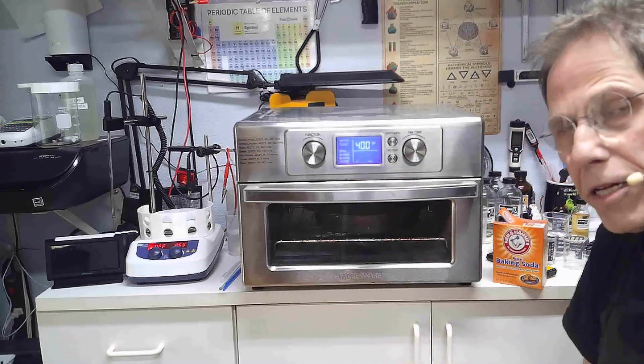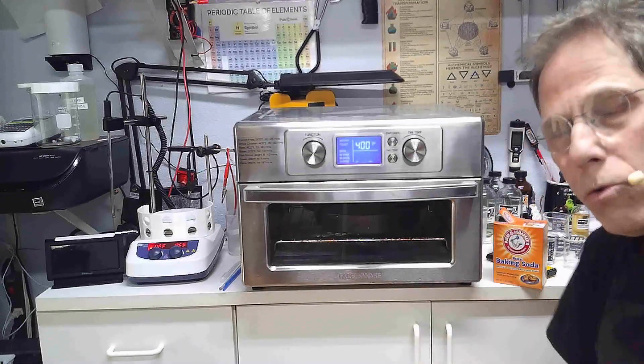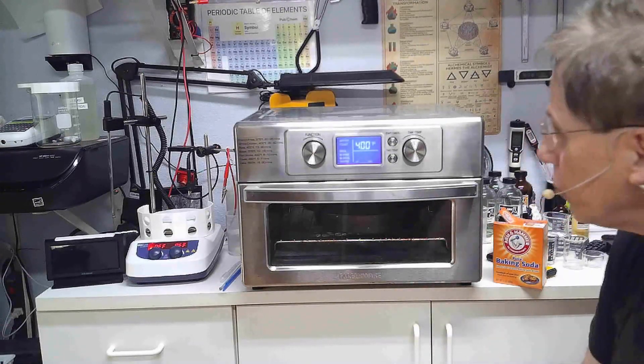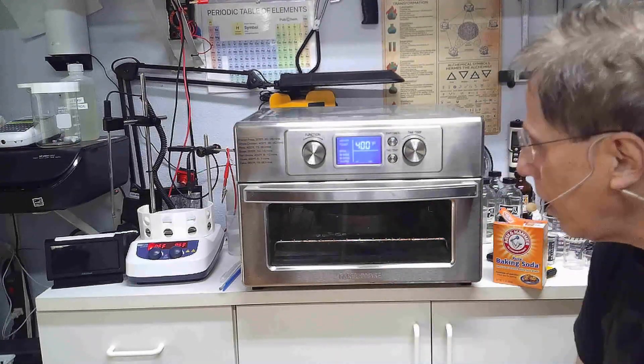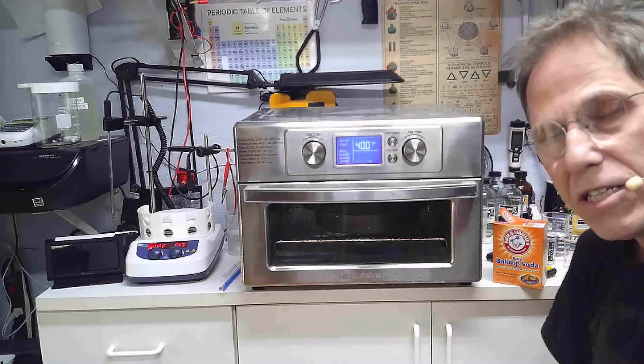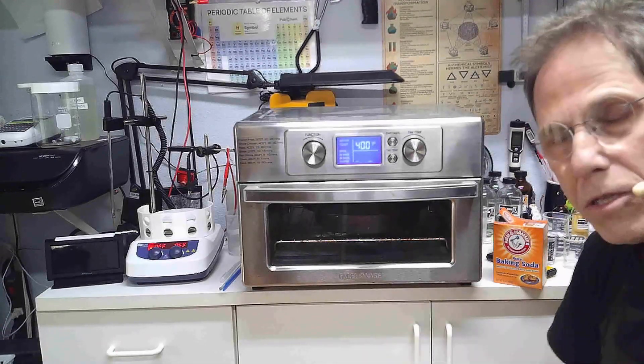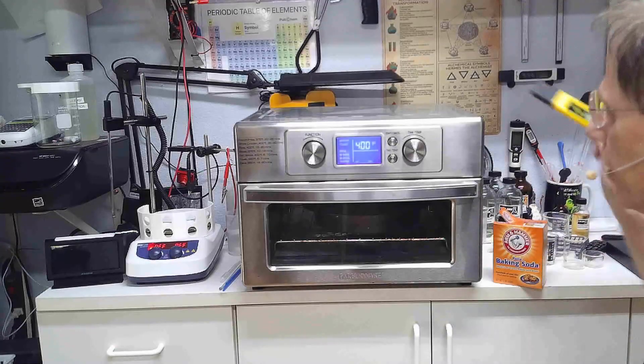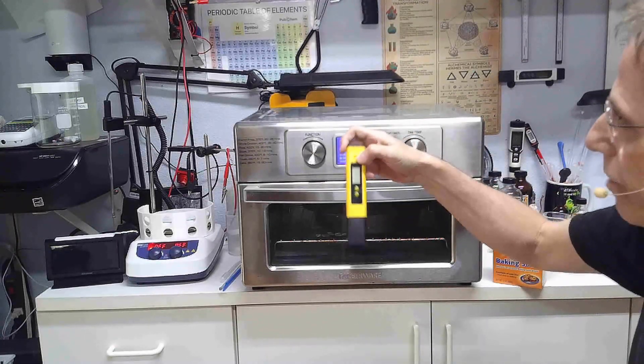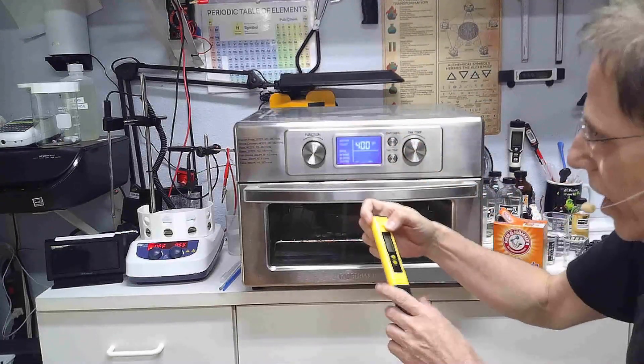And in 30 minutes your baking soda will now be washing soda and you can confirm that by doing the little experiment I did just a few minutes ago, putting a sixteenth of a teaspoon in 50 milliliters of water, mixing it up and dropping your pH meter in there and you should get a rating of 10.75 or even higher.